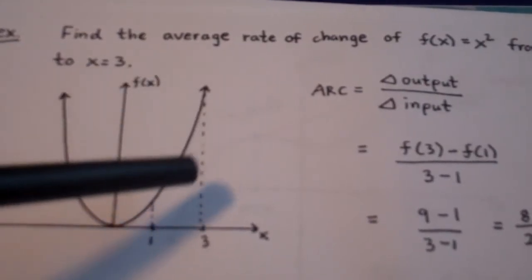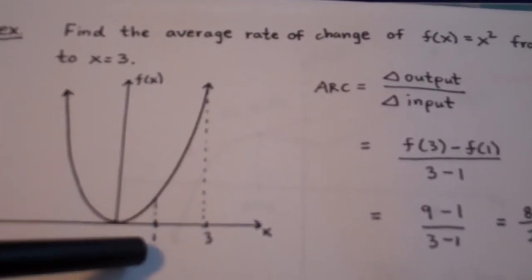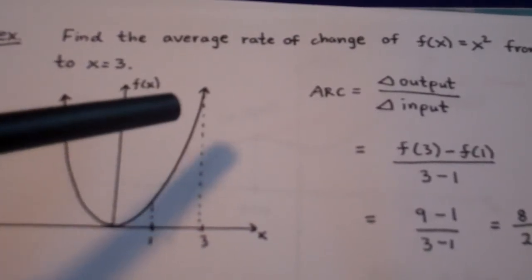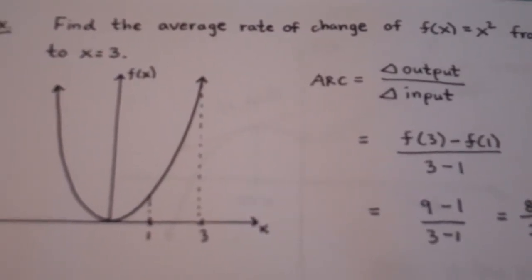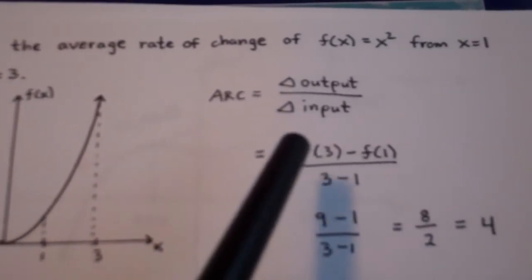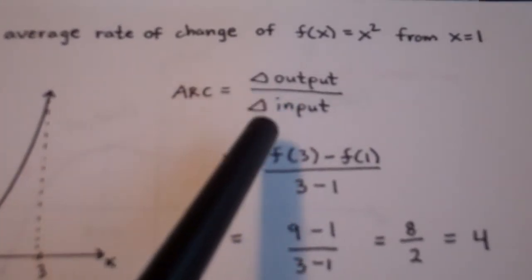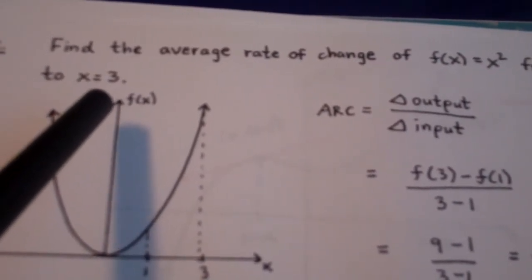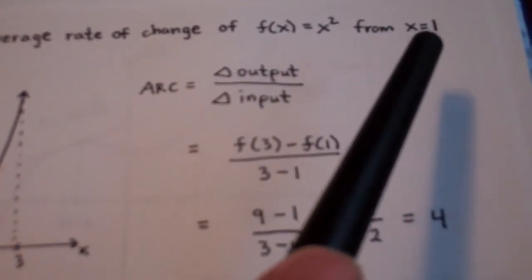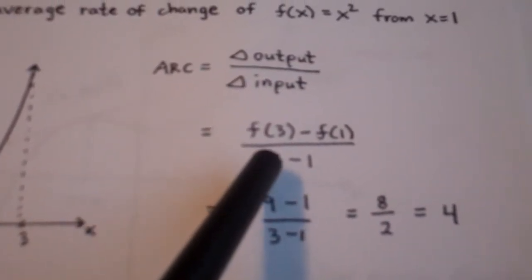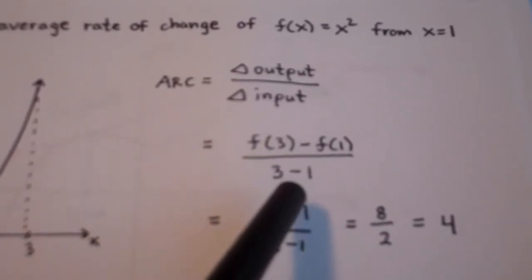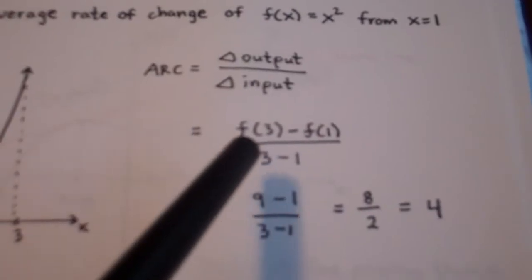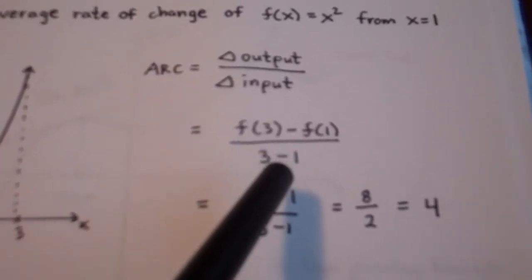We're simply trying to figure out the average rate at which this function is increasing from 1 to 3, and the average slope — average rate of change and average slope basically mean the same thing. The average rate of change is the change in the output divided by the change in the input. So the change in the output is f of 3 minus f of 1, and we divide that by the change in the input values, which would be 3 minus 1.